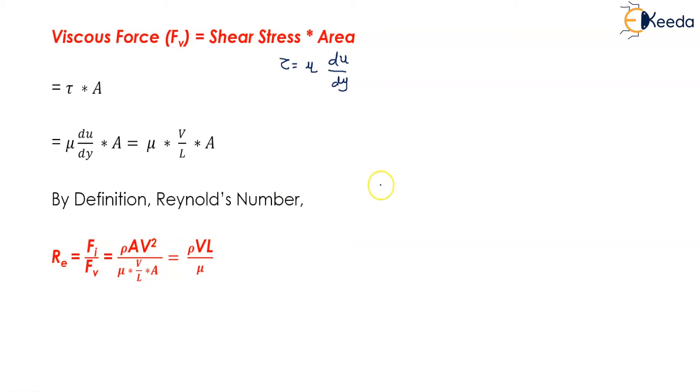So Fi was ρA into v² divided by μ into v upon L into A.